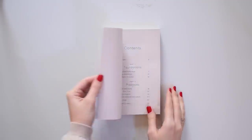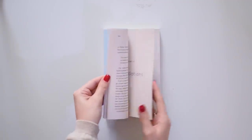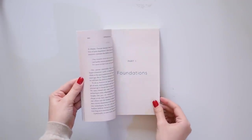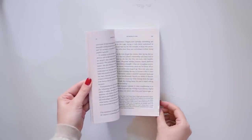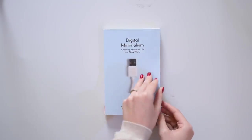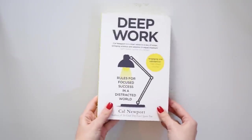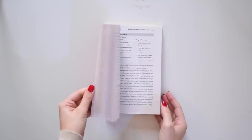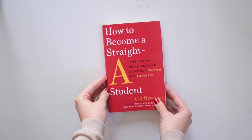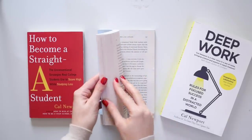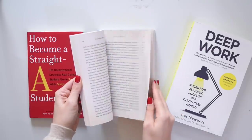Fast forward one year, I wanted to make amends, and I read a book all about digital minimalism, written by Cal Newport — the same author who wrote Deep Work and How to Become a Straight A Student. We've discussed both on this channel in case you want to check them out.